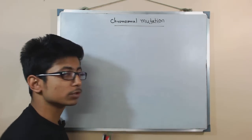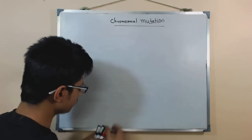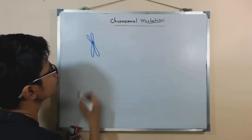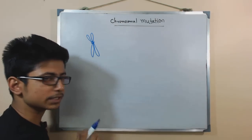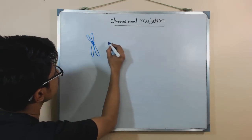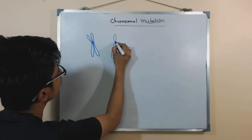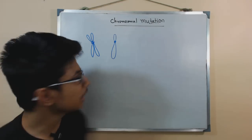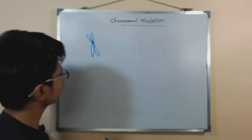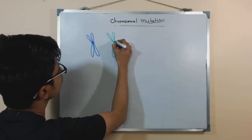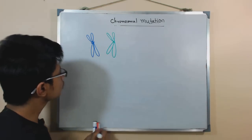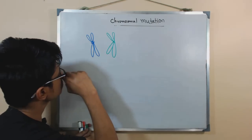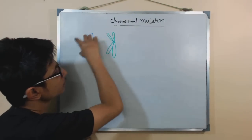Let's talk about chromosomal structural problems and structural mutations. What we know about the eukaryotic chromosome is that it has a centromere, a short arm, and a long arm. These chromosomes can exist as homologous pairs — blue with blue and green with green — and there are also non-homologous chromosomes present, which are the two different sets of chromosomes.